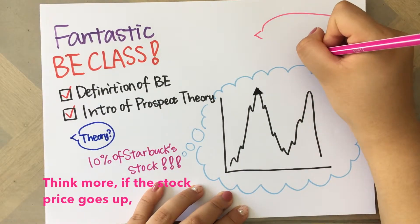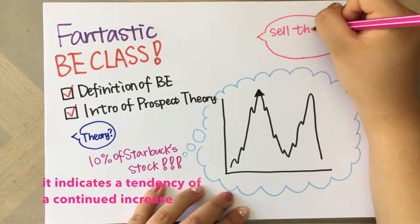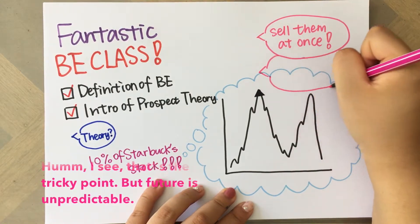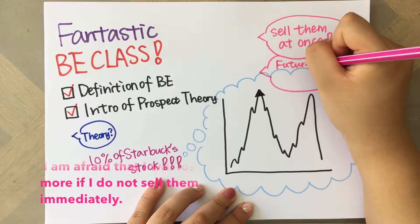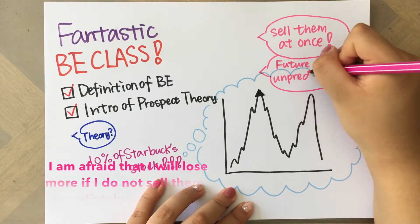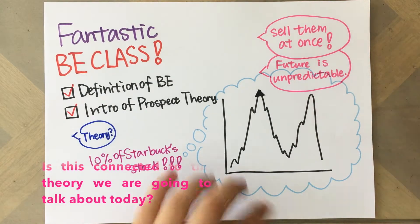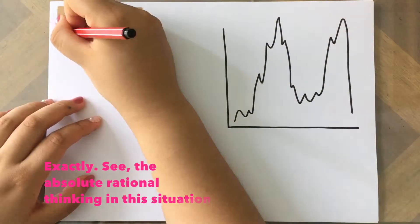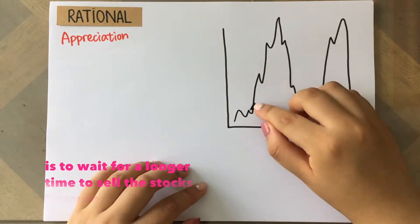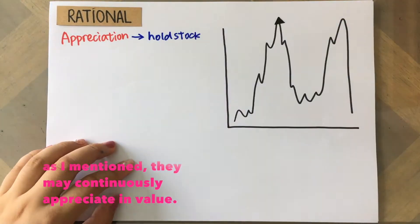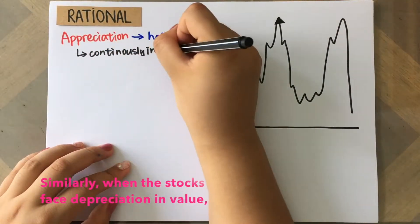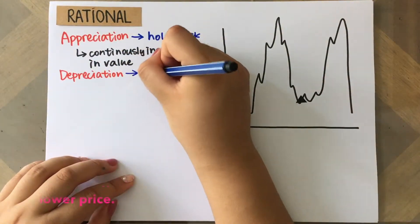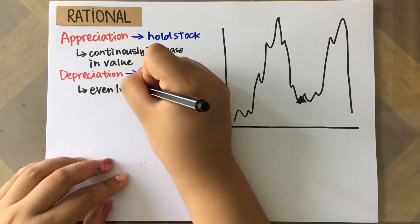Think more! If the stock price goes up, it indicates a tendency of continued increase in the near future, doesn't it? I see, that's the tricky point. The future is unpredictable — I'm afraid that I will lose more if I do not sell them immediately. Well, that is connected to the theory we are going to talk about today. The absolute rational thinking in this situation is to wait longer to sell the stocks because they may continuously appreciate in value. While similarly, when the stocks face depreciation in value, a rational AI will choose to sell immediately because it predicts the stock will fall to a lower price.